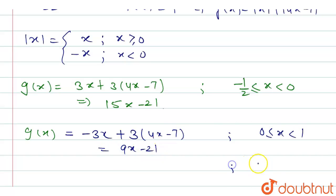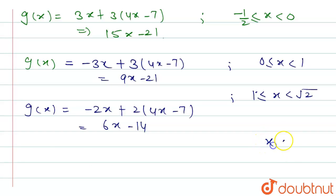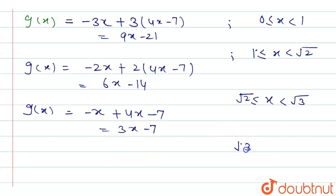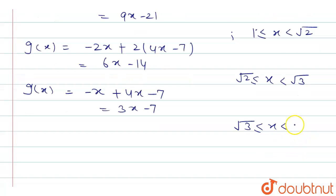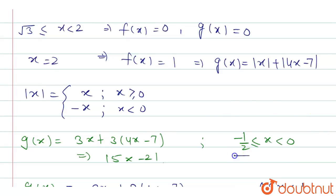For x ∈ [1, √2): g(x) = -2x - 2(7-4x) = -2x - 14 + 8x = 6x - 14. For x ∈ [√2, √3): g(x) = -x - (7-4x) = 3x - 7. For x ∈ [√3, 2): g(x) = 0. At x = 2: g(x) = 5x - 7 = 5(2) - 7 = 3. These are all the values of g(x) across the intervals.